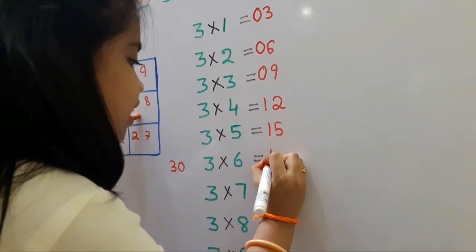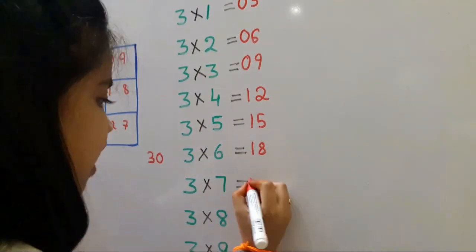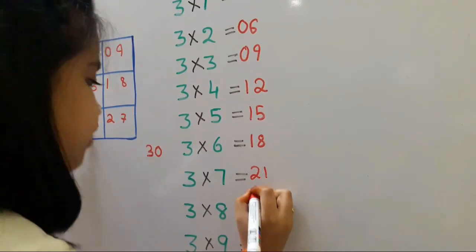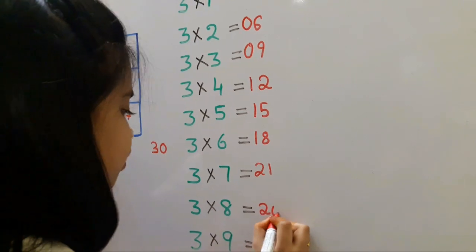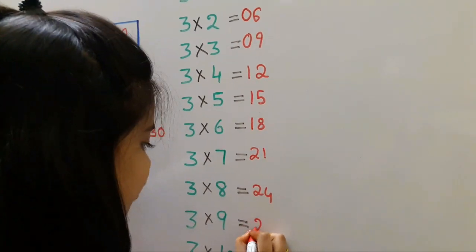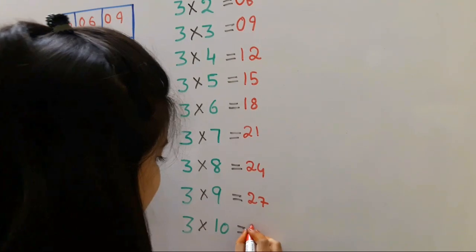3 sixes are 18. 3 sevens are 21. 3 eights are 24. 3 nines are 27. 3 tens are 30.